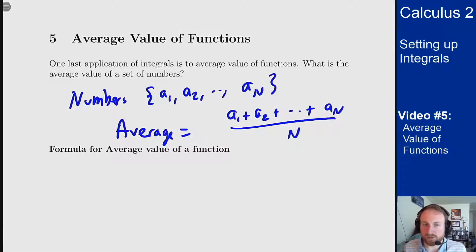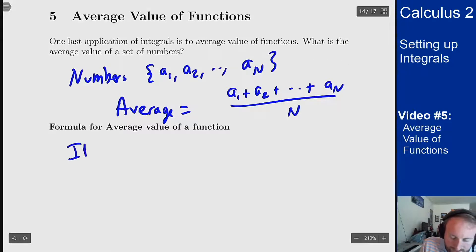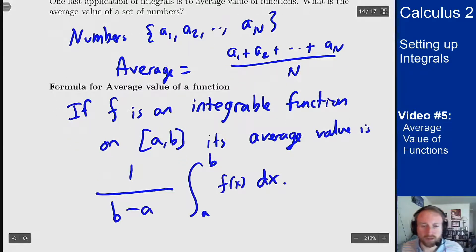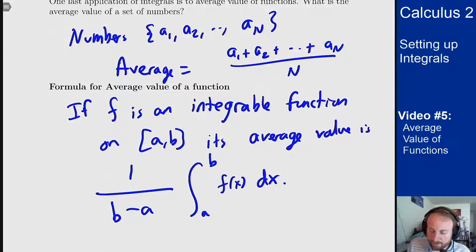So we use integrals to also talk about average values of functions beyond where a sum would talk about the average values of numbers. So if f is an integral function on an interval from a to b, its average value is this formula here: 1 over b minus a times the integral from a to b of f of x.